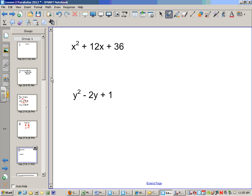Take a second, pause the video, do these two on your own. The top one will be x plus 6 squared, because half of 12 is 6 and square root of 36 is 6. The next one is going to be y minus 1 squared. Half of negative 2 is negative 1, and square root of 1 could be negative 1 because negative 1 times negative 1 equals 1.